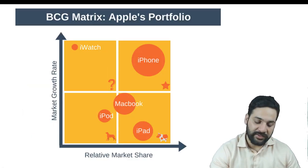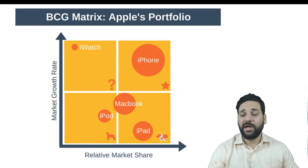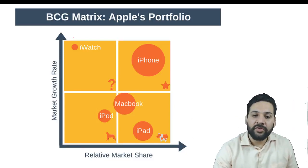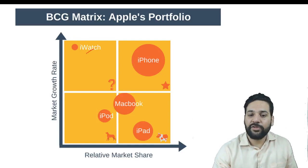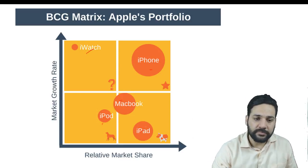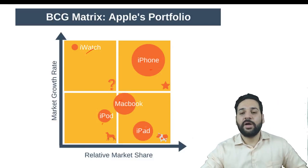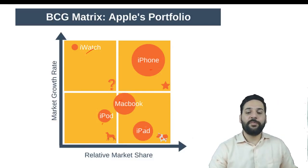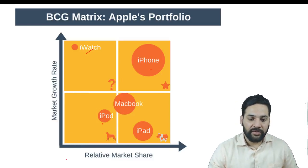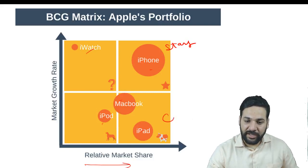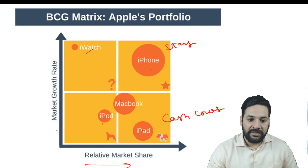Here is the BCG matrix of Apple's portfolio. Apple is producing iWatch, iPhones, MacBooks, iPods, and iPads. We are dividing the whole portfolio into four parts based on market share and growth rate: Stars, Cash Cows, Dogs, and Question Marks.